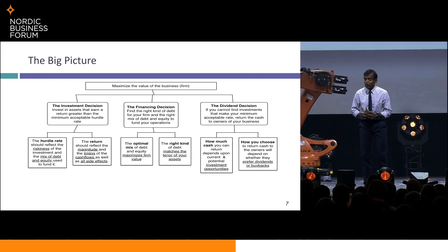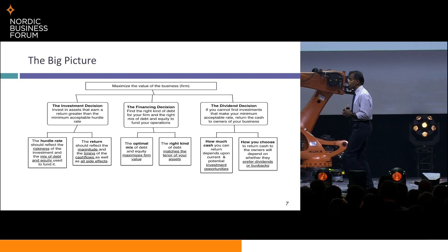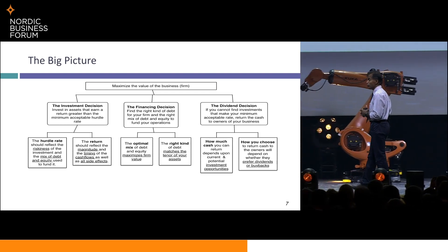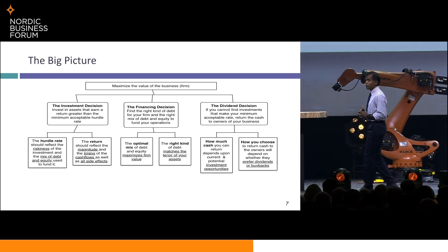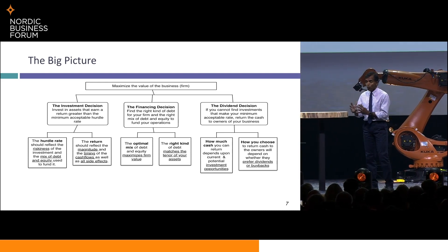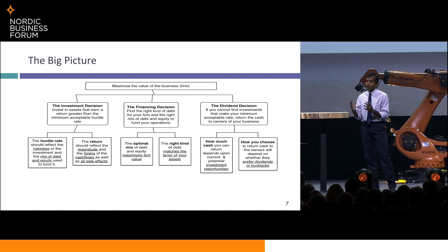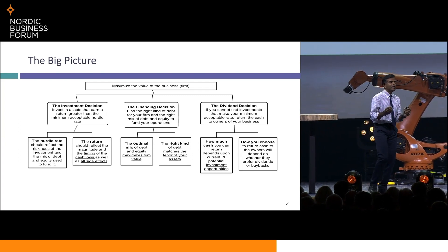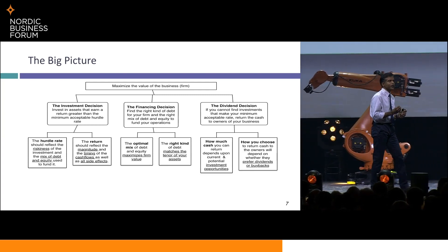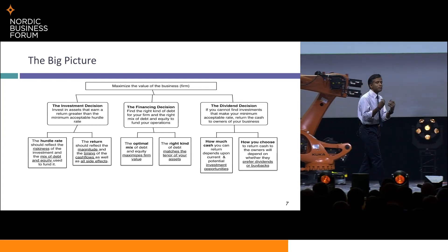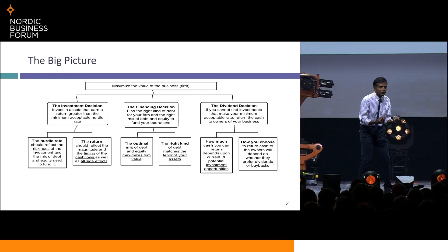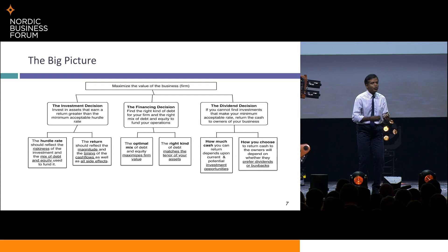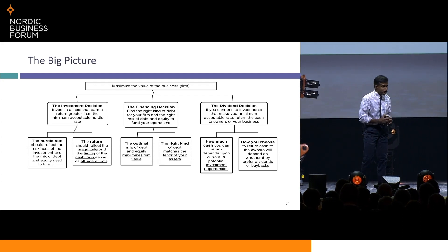Fund them well. Remember there are two ways to fund a business: one is to borrow money and the other is to use equity. Find the mix of debt and equity that minimizes your hurdle rate. It's better to have an 8% hurdle rate than a 10% hurdle rate.